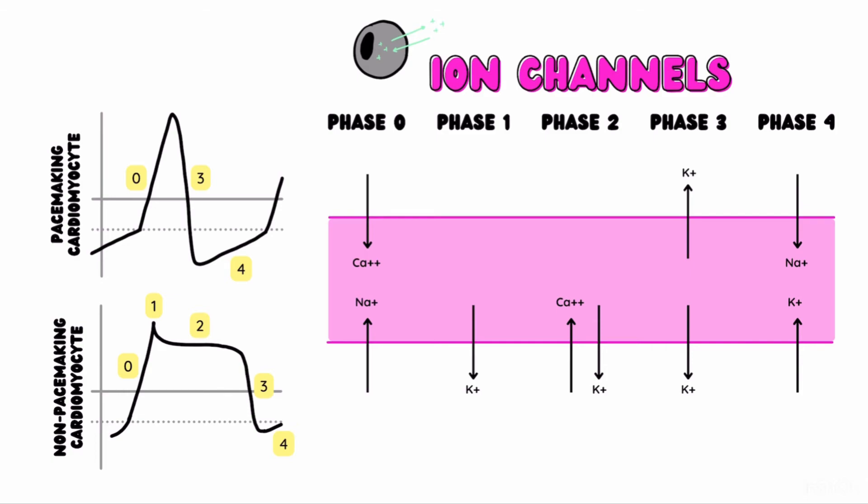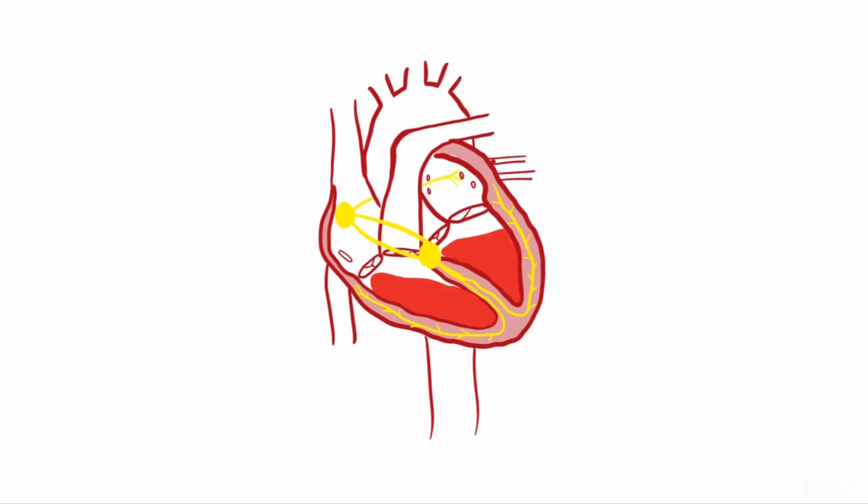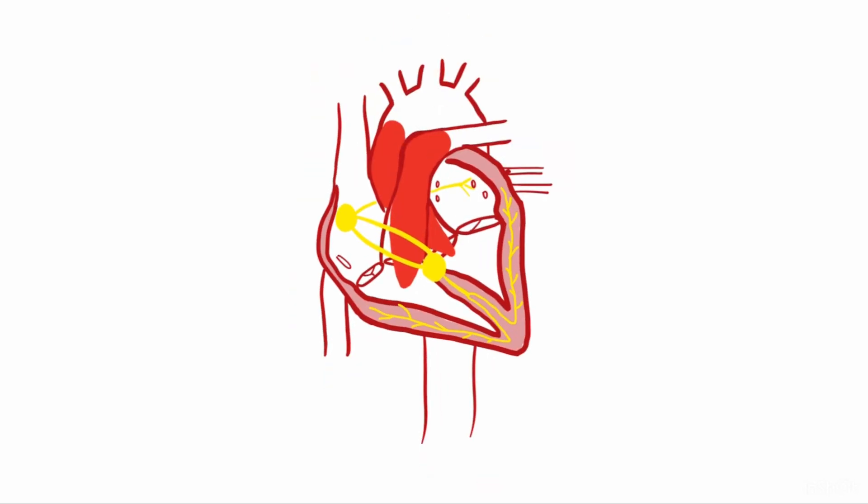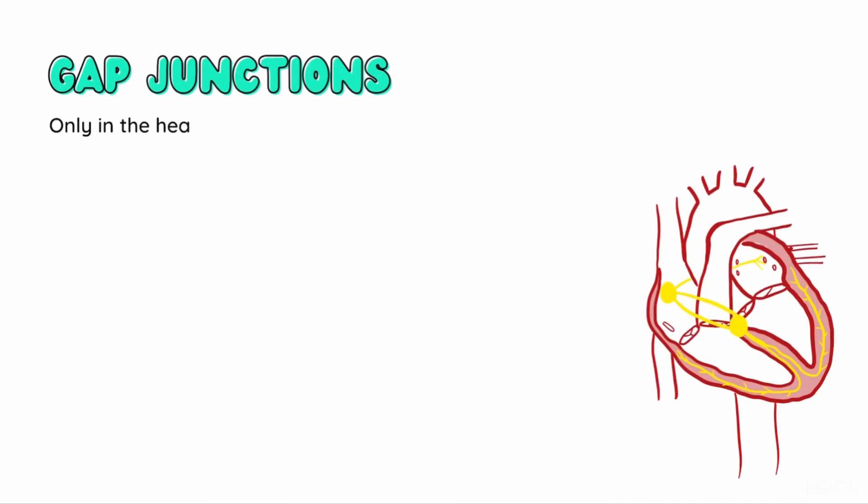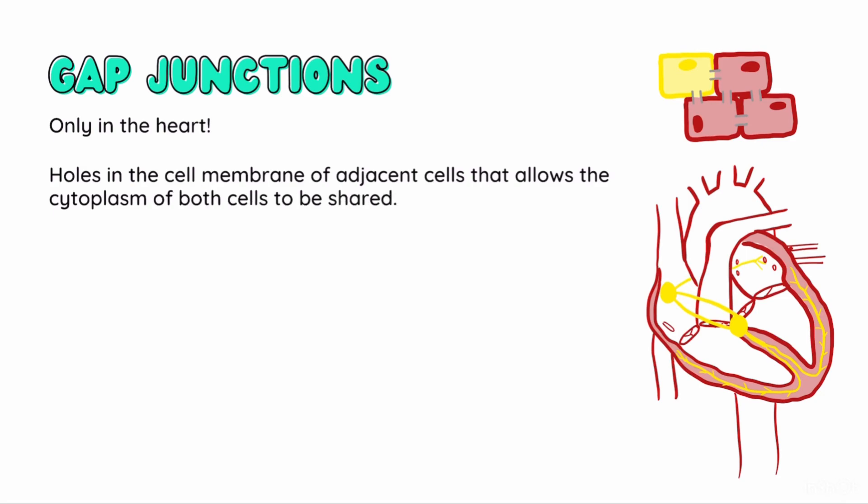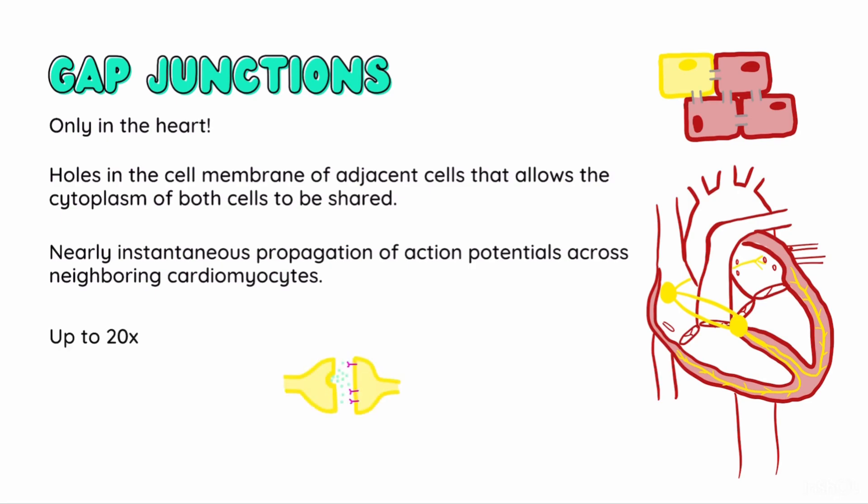By now you should realize that the pacemaker cells and cardiomyocytes must be intimately connected to pull this whole thing off. The pacemaker cells initiate the contraction, but the cardiomyocytes must respond in synchrony to actually pull this off. We can thank electrical synapses, or gap junctions, for that. The heart is the only location in the human body with gap junctions. These are essentially holes in the cell membrane of two adjacent cells that allows the cytoplasm of both cells to be shared. This leads to an incredibly quick propagation, or spread, of the action potentials across all the neighboring cardiomyocytes. This can be up to 20 times faster than the rate of communication between neurons, which have chemical synapses instead of electrical ones. Such instantaneous spread of the action potentials leads to a synchronized contraction of the myocardium with every heartbeat.